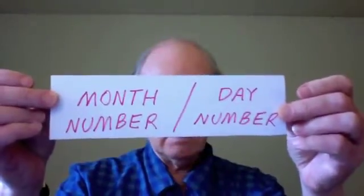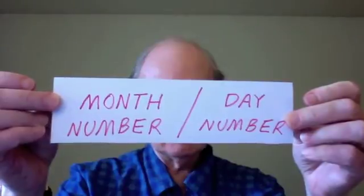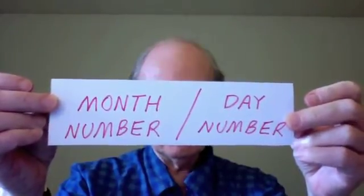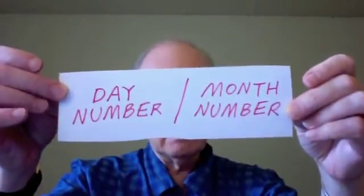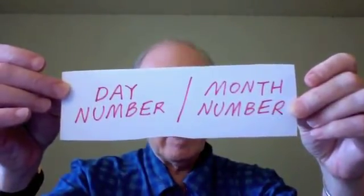This is about date names. Here in the United States, we have a system of naming dates of the year by numbers. Our system is the month number followed by the day number. Elsewhere in the world, a different system is used — the opposite: the day number followed by the month number.